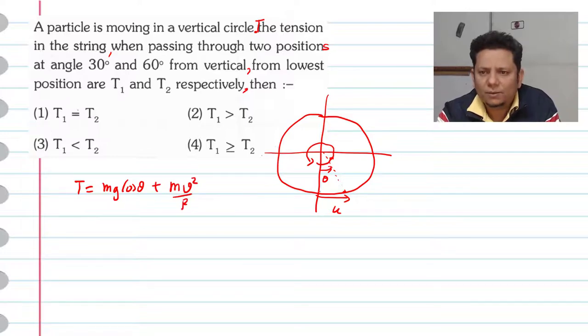v is the localized velocity value at that point. The minimum velocity you provide so that complete circle can happen, or it can be a higher value. So here you write the value of v for whatever value is there at each position. Now the question is about 30° and 60° positions from vertical at this point.